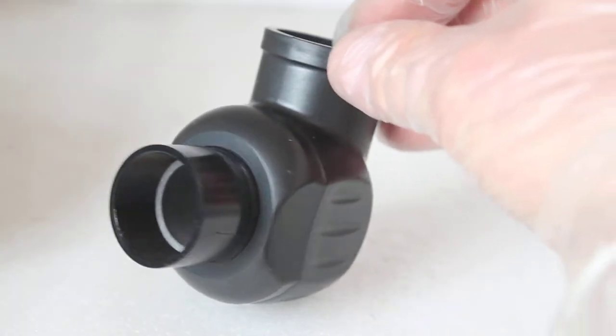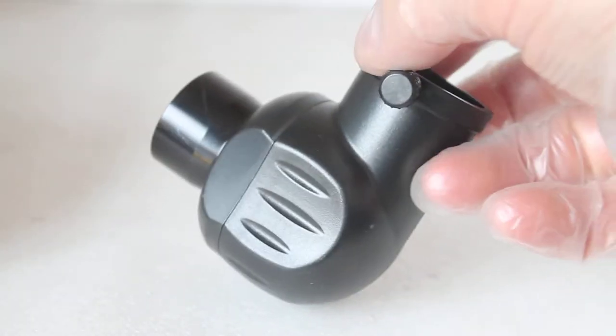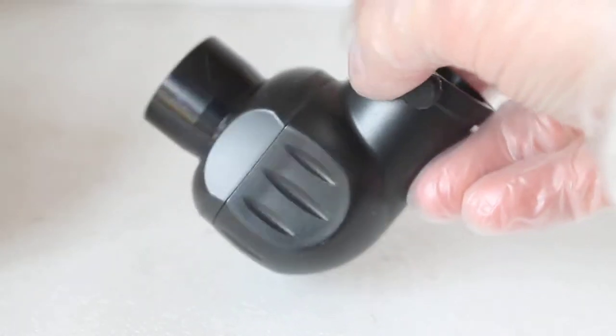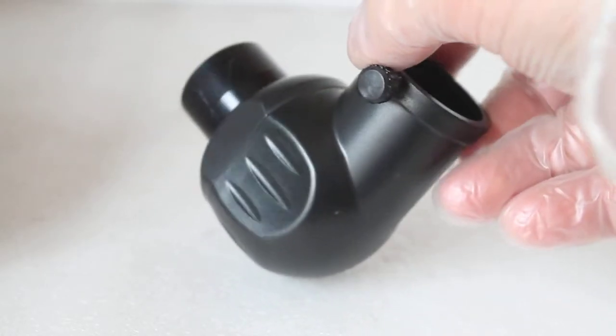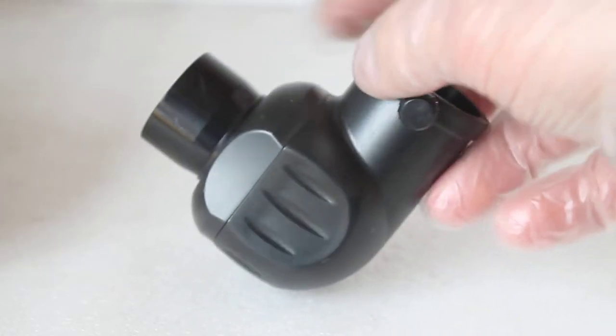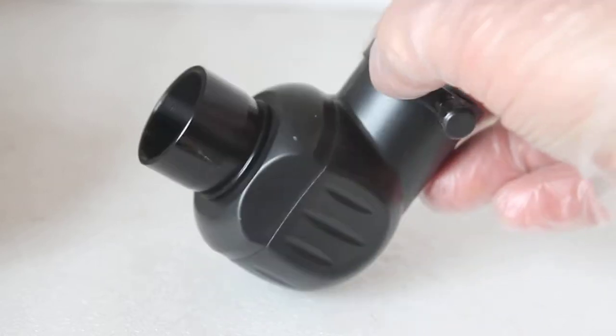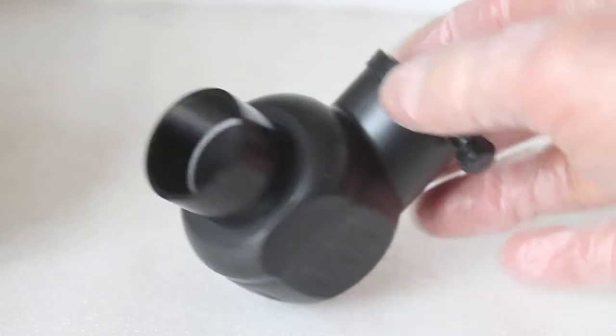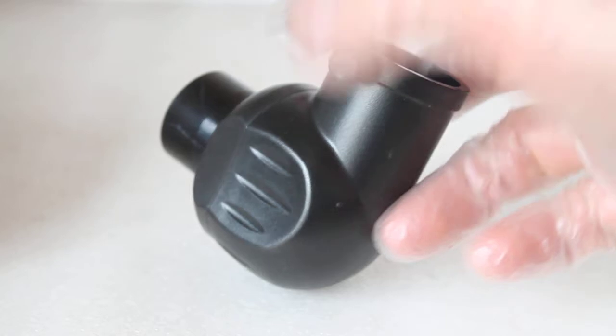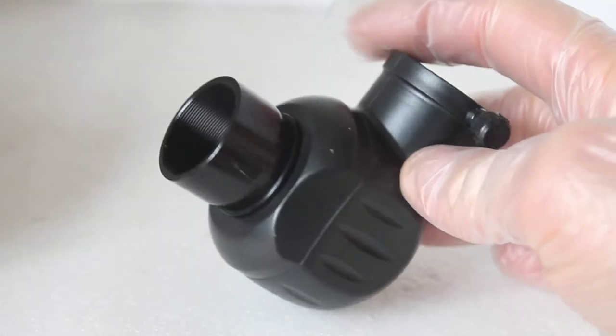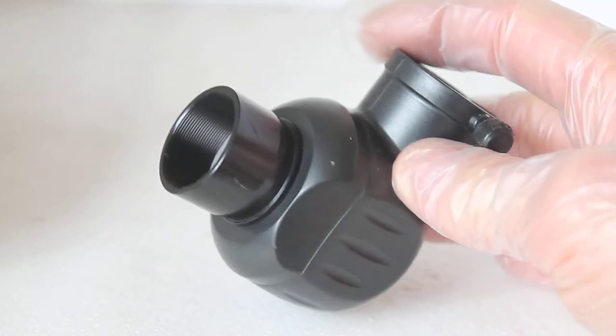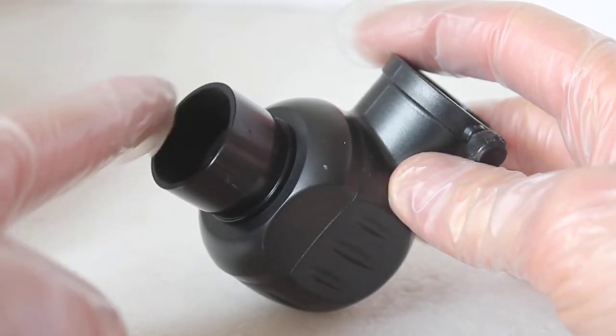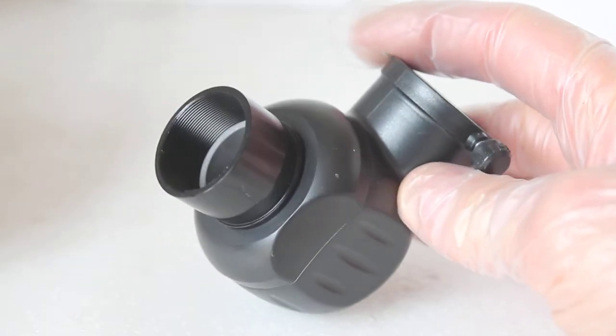...the Celestron PowerSeeker and Celestron AstroMaster telescopes. They probably use the same prism inside. These are quite low cost, so this will be basic quality optically. This particular one has a plastic body, but it does feel very well constructed. You can just about see a thread on the inside, but it's not threaded for filters.